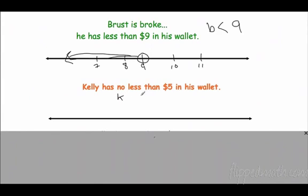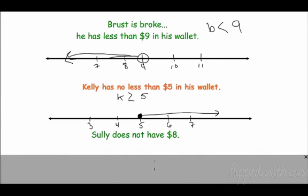Kelly has no less than $5 in his wallet. Kelly has no less than 5. We know 5 is going to be our boundary. Let's go 6 and 7, let's go 4 and 3. Alright, could he have $5? Yes, because he has no less than $5. So $5 could be a possibility. So let's make that included. That means we know we're going to do this. He has no less than 5. That means he's got to have more than 5, right? So all the numbers more than 5 go that way.